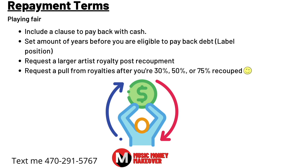Lastly, request a pull from royalties after you're 30%, 50%, and 75% recouped. When you hit 30% recoupment, take 15% of that amount and get paid for it. At 50% recouped, take 15% of that and get paid. At 75% recouped, take 15% of that and get paid. When you finally hit 100%, get the rest — that way you can eat along the way. There are numerous indies doing this type of deal. I recommend you request this from major indies; it's not happening at the majors.